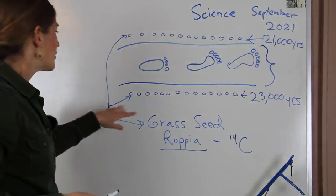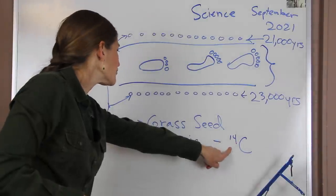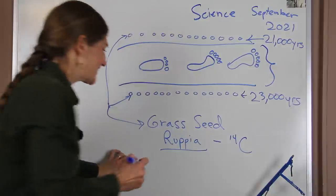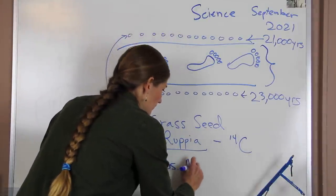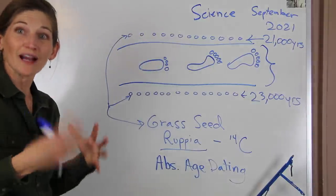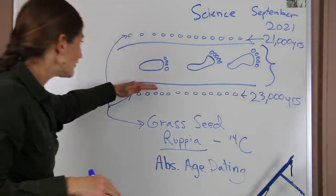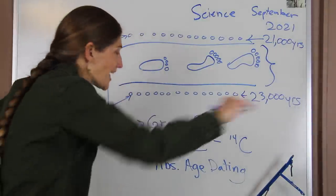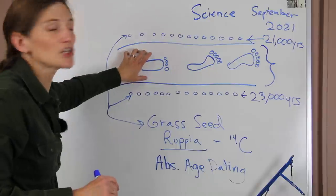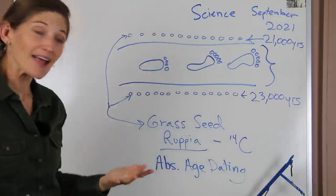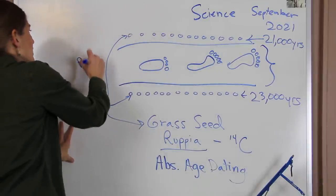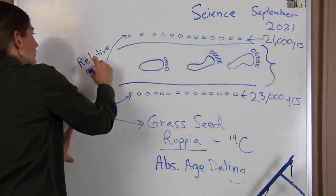So the process of using Carbon-14 to age date these grass seeds - that's our absolute age dating technique. And then we're using our relative age dating techniques to know that when we have layers that are put down horizontally, the ones down below are older than the ones above. That's how we can sandwich these footprints. That's what I thought was really cool - it shows that we have relative and absolute age dating to figure out the age.